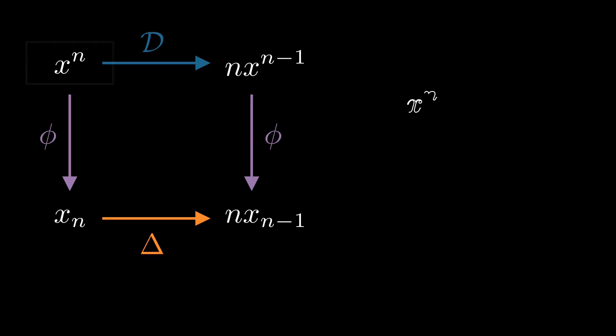Then we see that taking the derivative of a power of x, and then taking the phi, is the same as taking the phi first and then taking the delta. By linearity, we can extend this identity to all polynomials, and a bunch of other functions we can get to via series expansions.